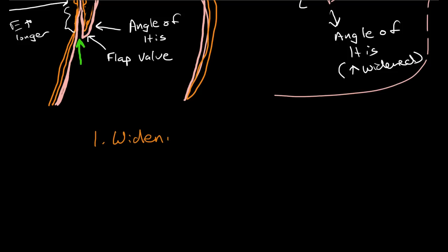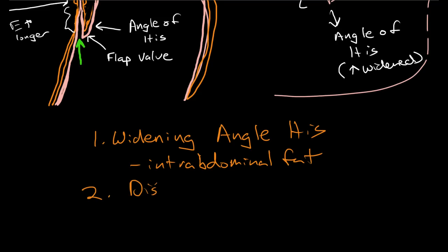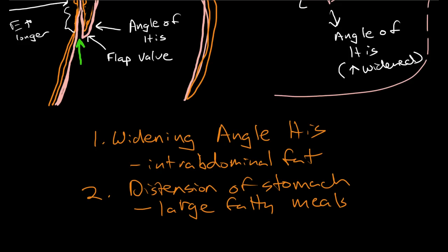Widening of the angle of His, and that's caused by intra-abdominal fat or obesity. Or you can have distension of the stomach, which thins the gastric wall. And this is usually caused by large fatty meals and soft drinks, carbonated drinks. And then the third is the hypotonic lower esophageal sphincter.